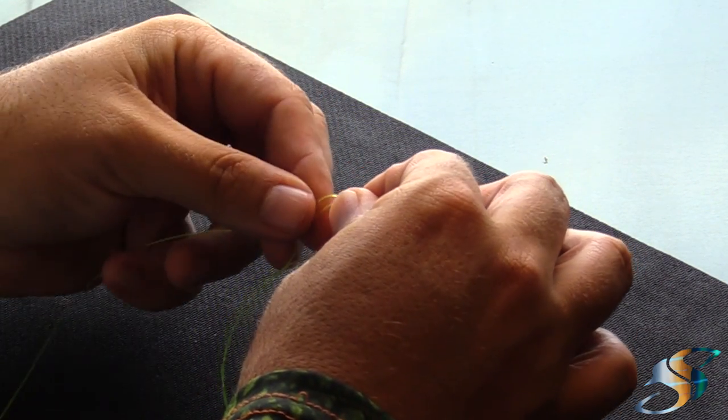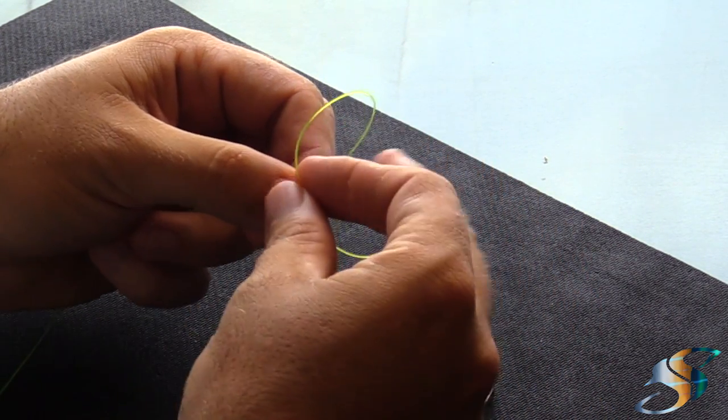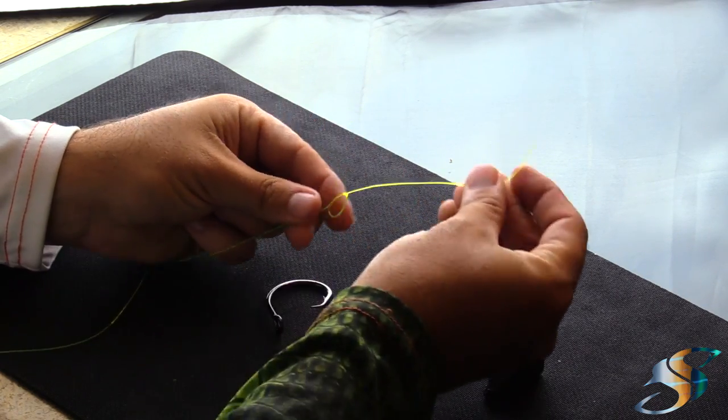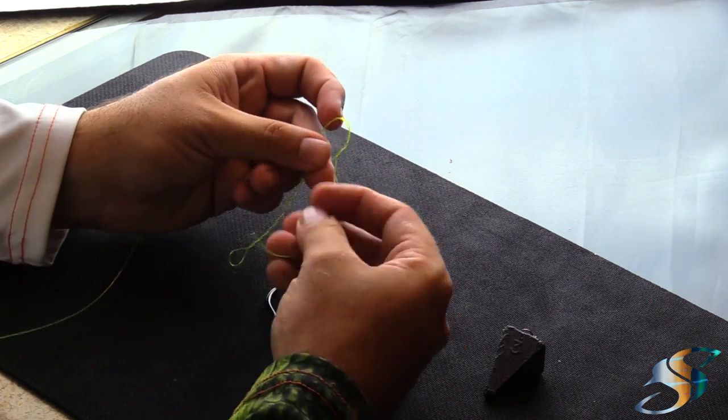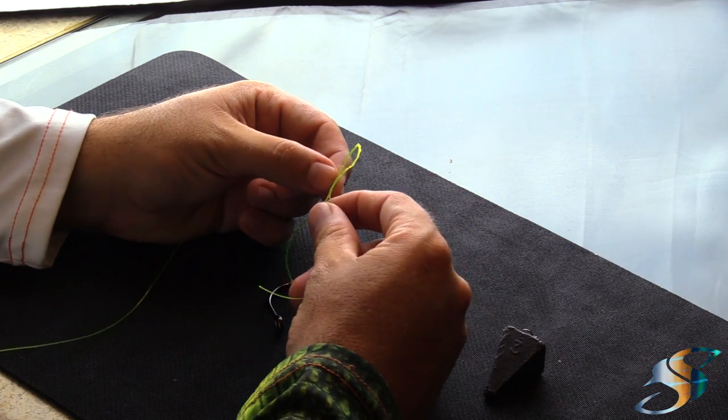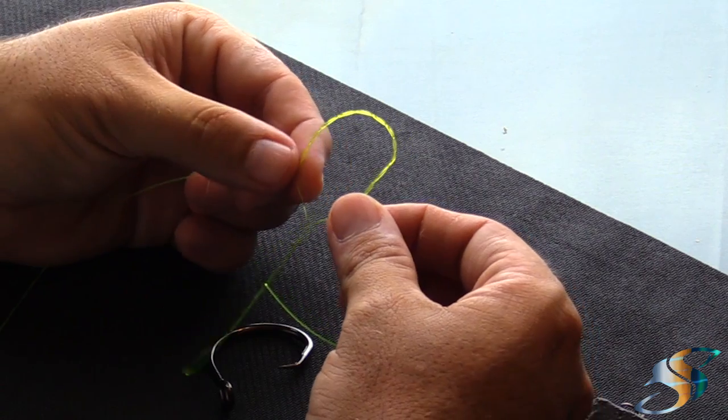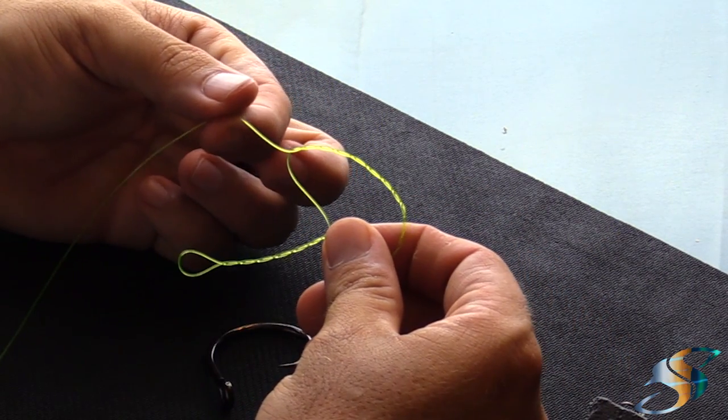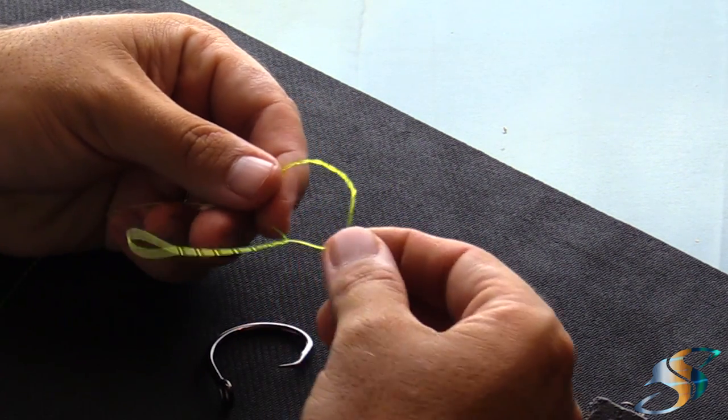The very next step is to take this tag end and essentially wrap it six times. So one... [wraps]... all right, there's my sixth wrap. This is what you should have: essentially I have a tag end here and then my main line that goes down here that will house my second loop.